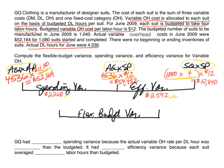Now we want to find the flexible budget variance. Because our two variances have different signs, we take the difference: $2,592 minus $2,268 = $324. The sign follows the larger number, which is unfavorable, so our overall flexible budget variance is $324 unfavorable.